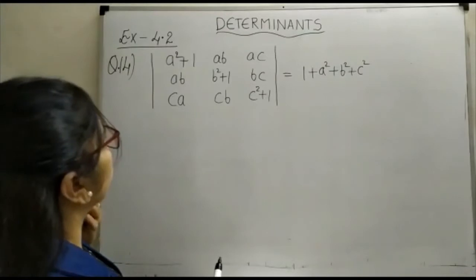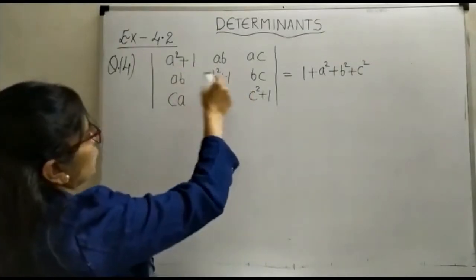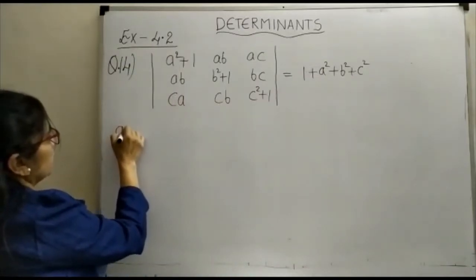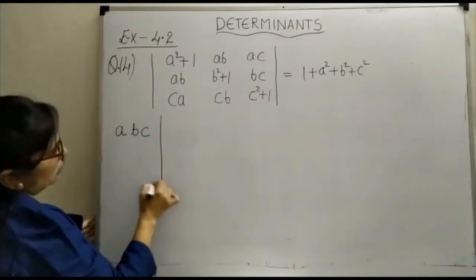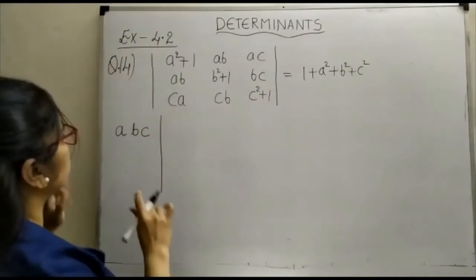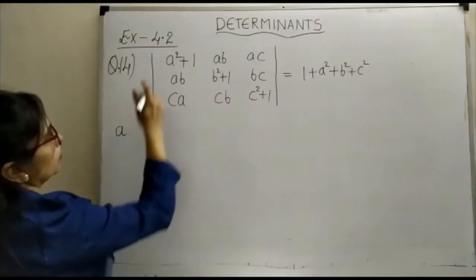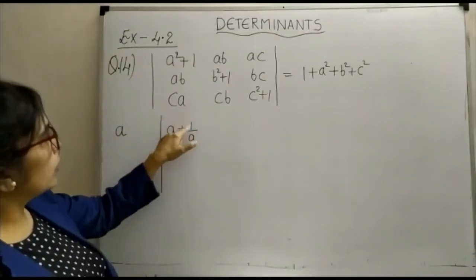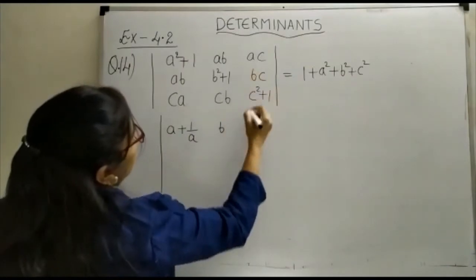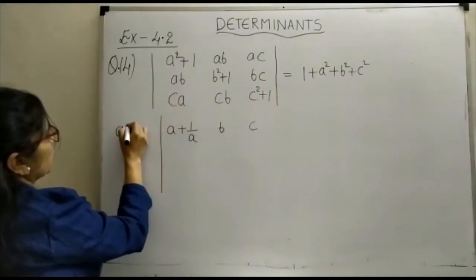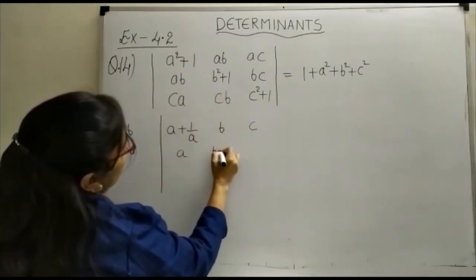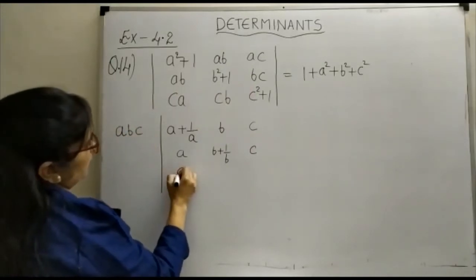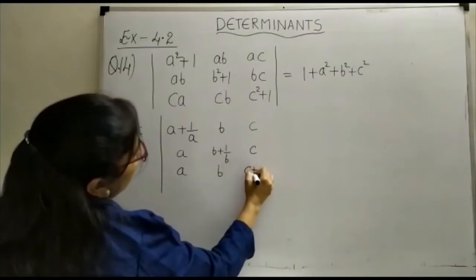What we can do is take a common from the first row, b common from the second row, and c common from the third row — giving us abc as a factor. When we take a common from the first row, the first element becomes a + 1/a, the second becomes b, and the third becomes c.